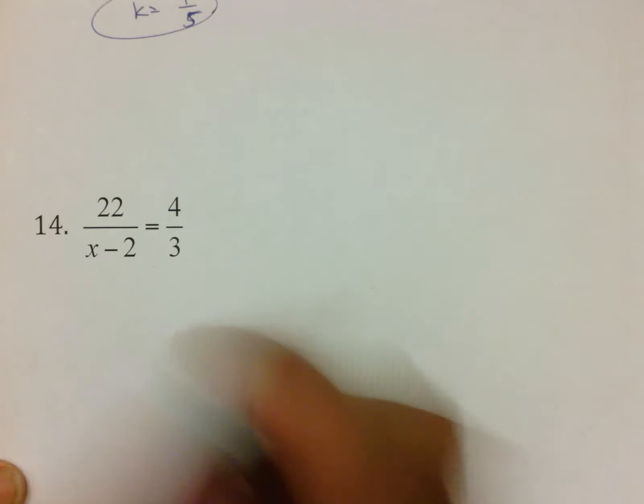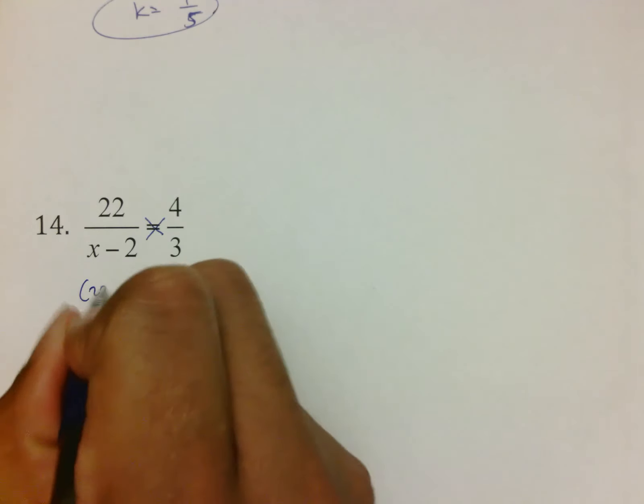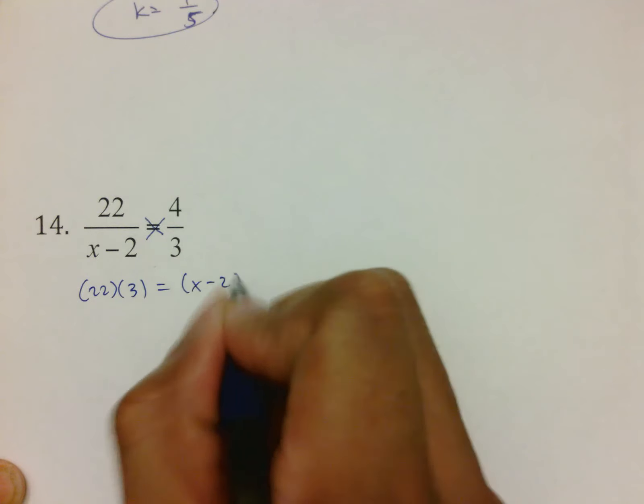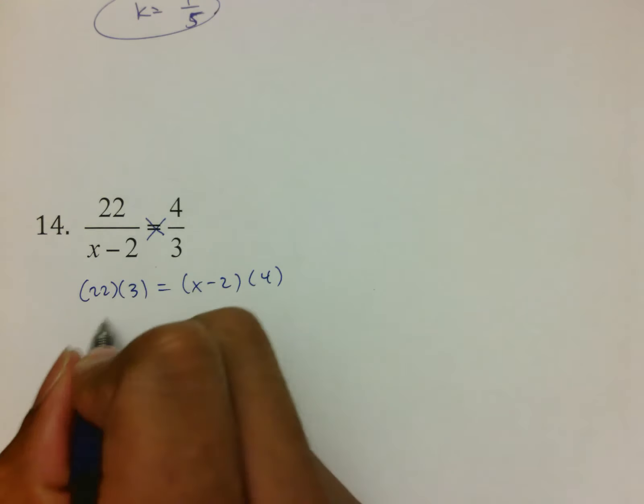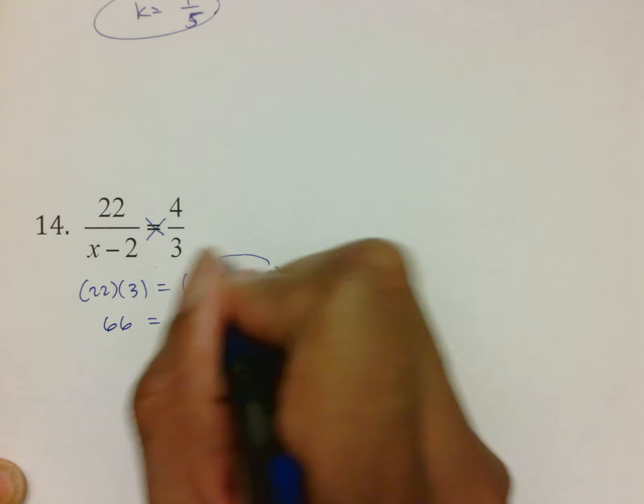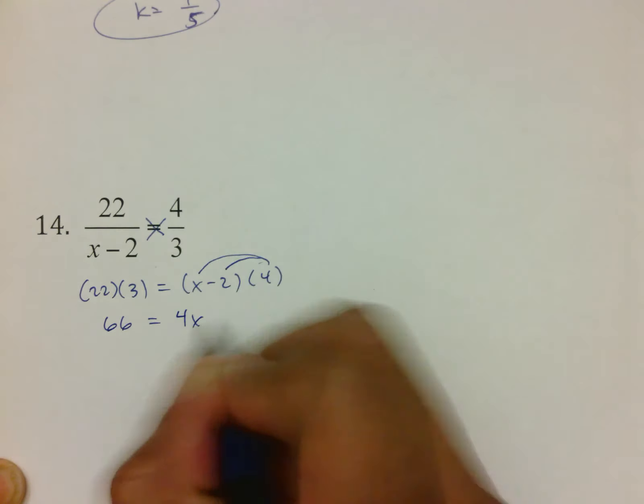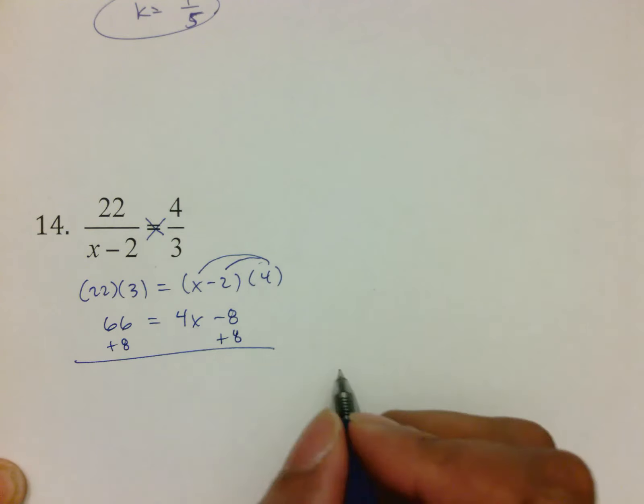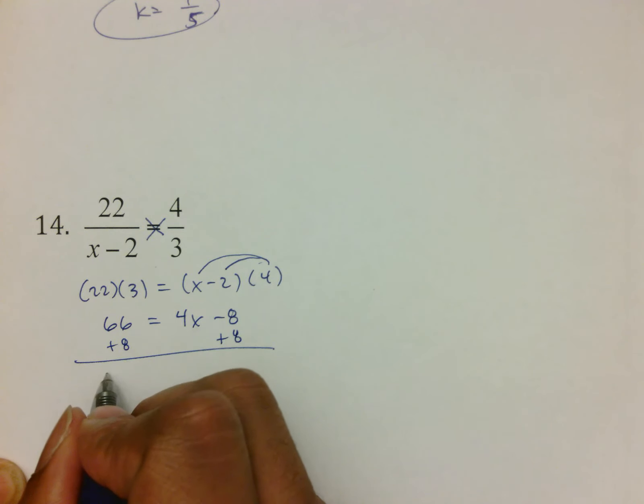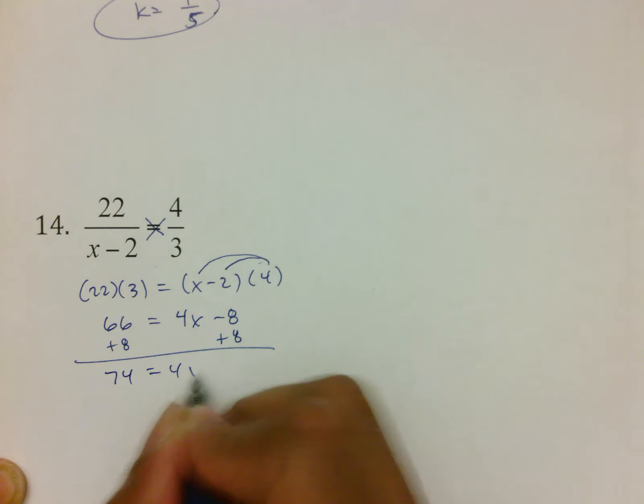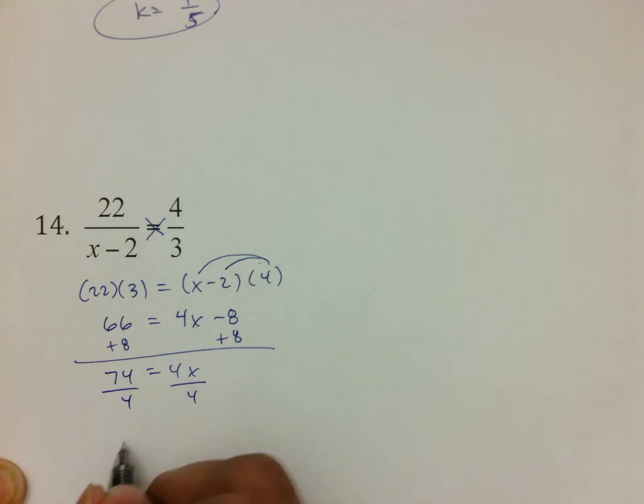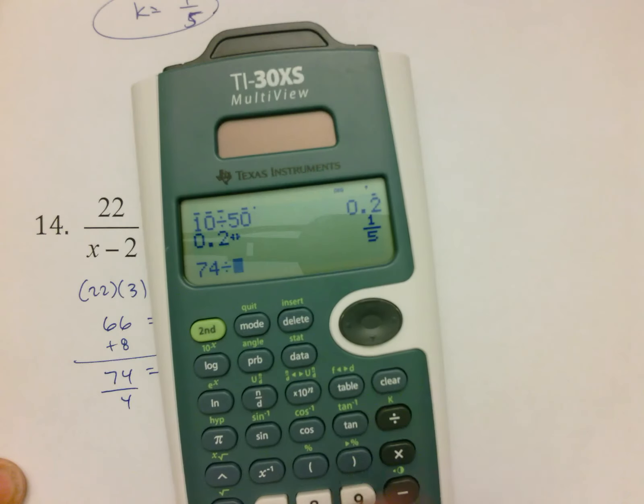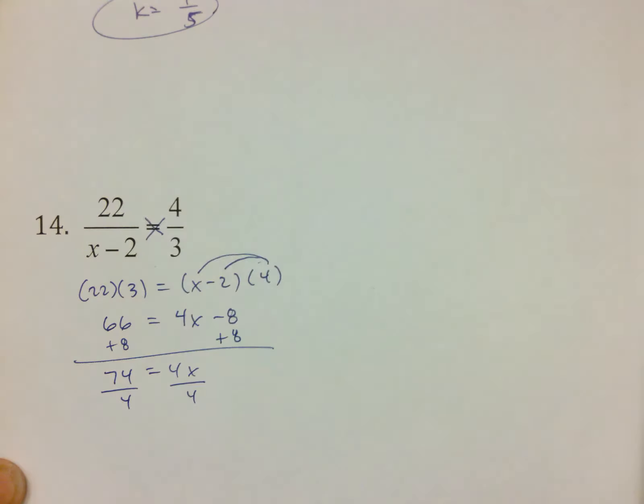14 is also a proportion. Cross multiply. 22 meets 3. X minus 2 meets 4. This side here gives me 66, but the part where people are messing up is they're forgetting to distribute. That turns into 4X minus 8, which then from there you want to go ahead and add 8 to both sides, getting 74 equals 4X. And then dividing by 4 to get whatever 74 over 4 is, 18.5, which when you convert that, turns into 37 over 2 as your value of X.